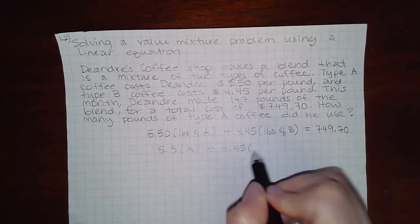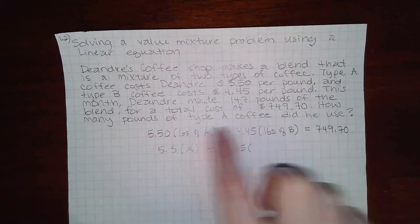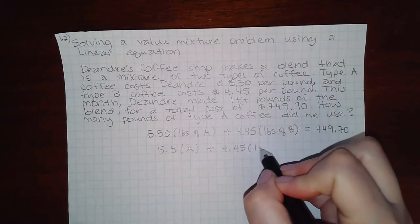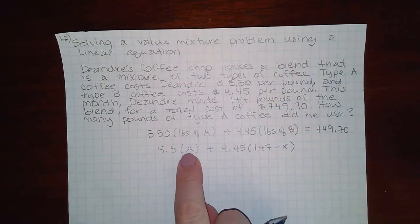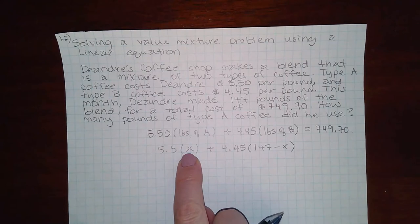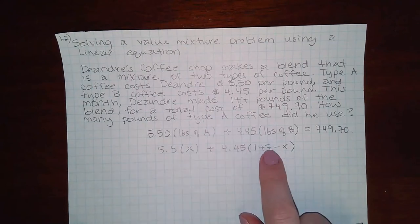But, since I know these two guys' relationship, I know that together they make 147 pounds, this would be 147 minus X. So however much of type A he used, the rest of the 147 pounds would be used for type B.